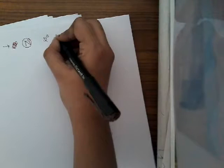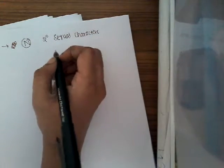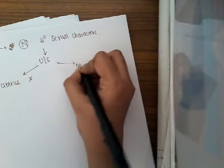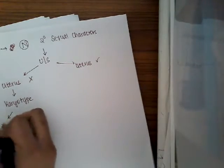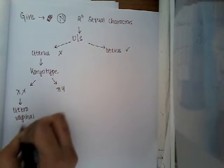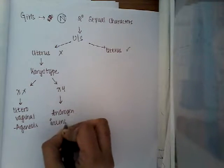How are you going to diagnose a child with primary amenorrhea? First, you'll have to see whether secondary sexual characters are present or absent. If the girl has normal secondary sexual characters, you'll have to do an ultrasound scan to see whether the uterus is present or absent. If the uterus is absent, then do karyotyping. Karyotyping can show XX or XY. If XX with absent uterus, it is uterovaginal agenesis. If XY with absent uterus, it can be androgen insensitivity.